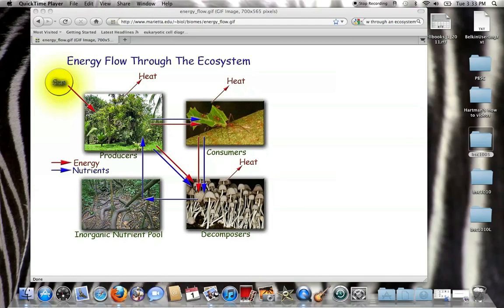By non-living, we mean basically the nutrients, the soil, the rocks, the water, the gases that are produced. Those are all non-living entities of the ecosystem.